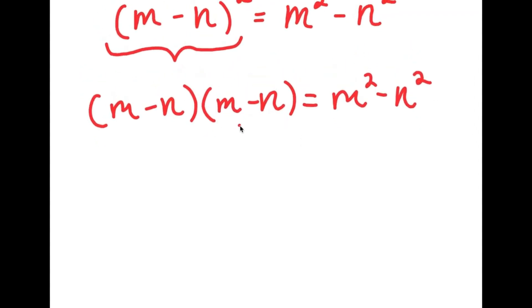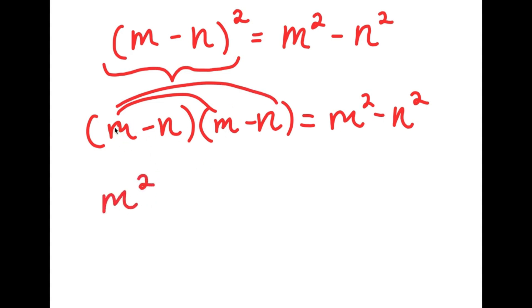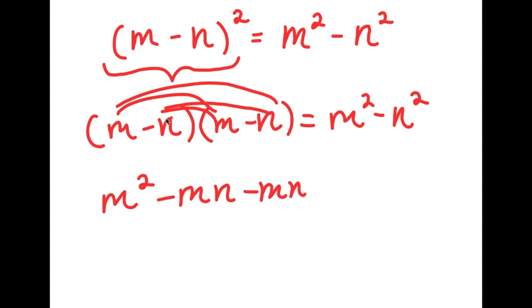From here, I'm going to expand this by multiplying these two. To multiply these two, I'm going to first start by distributing the m. m times m is m squared. m times negative n is negative mn. Now I'm going to distribute the negative n. Negative n times m is negative mn, and negative n times negative n is positive n squared.